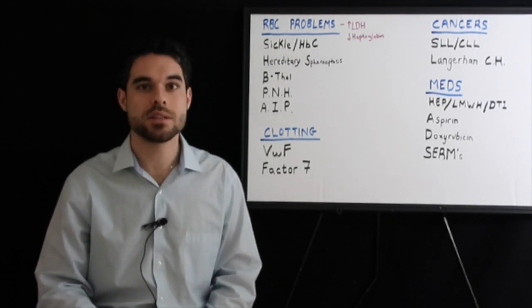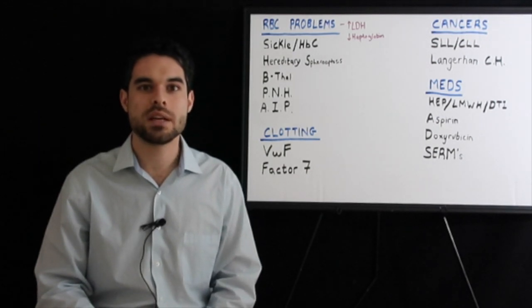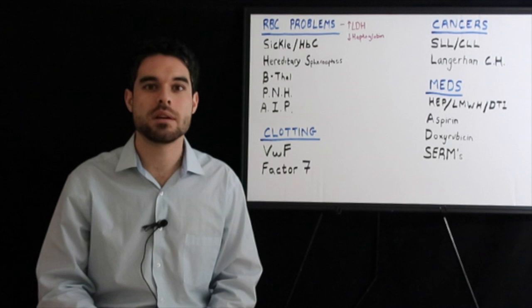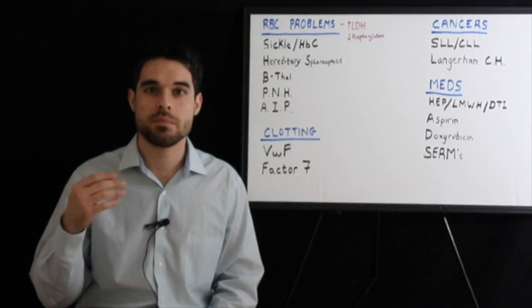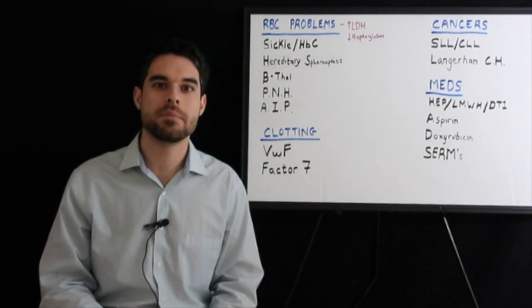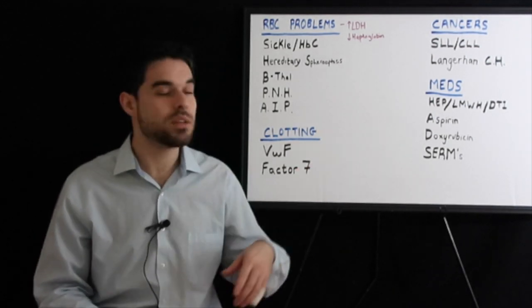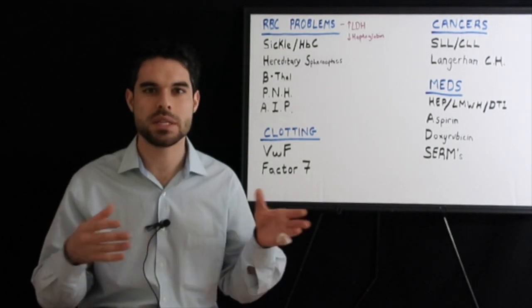Langerhans cell histiocytosis is very high yield. In this condition, you have lytic bone lesions. A child will have lytic bone lesions, maybe a rash, maybe recurrent ear infections because you can have a mass at the mastoid bone. You see S100 positive.